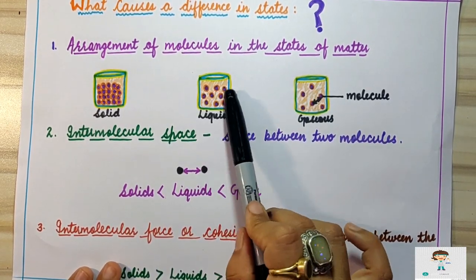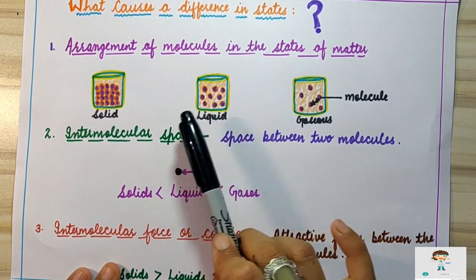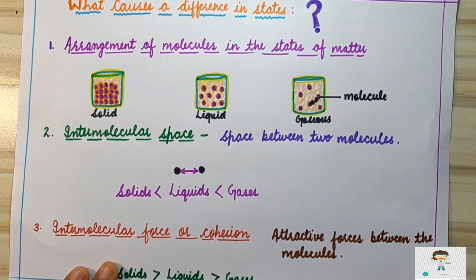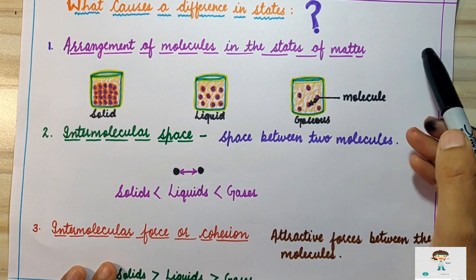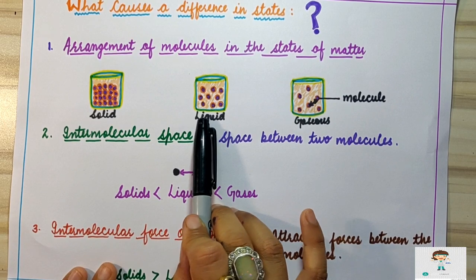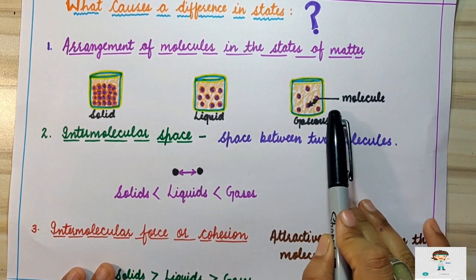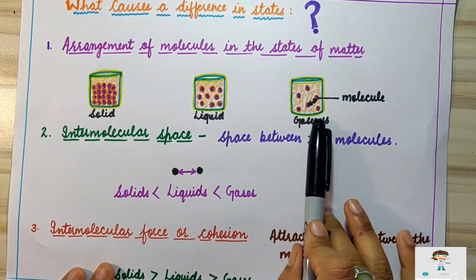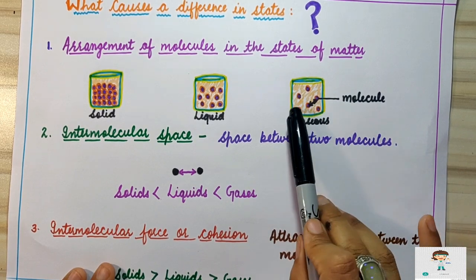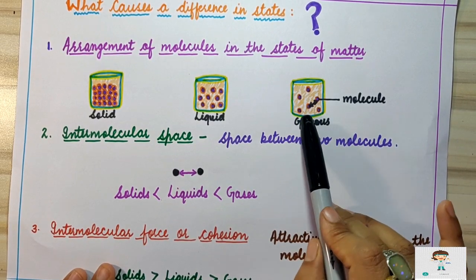In liquid, particles have intermolecular spaces greater than those in solids, which is why liquid particles can slip over one another and flow. If you pour a glass of water in one corner of the room, after some time the water flows to another corner. In gaseous state, intermolecular space is maximum because particles are very far away from each other and independent, so they can easily move from place to place.